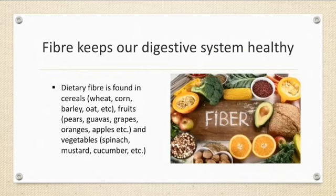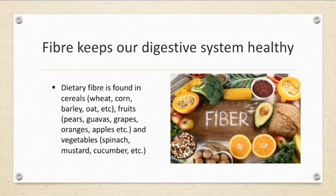Now we will talk about dietary fiber and how it keeps our digestive system healthy. Dietary fiber holds water in it and softens the faeces in the large intestine so that it can pass out of the body easily. We can keep our digestive system healthy by eating food with plenty of fiber. Dietary fiber is found in cereals including wheat, corn, barley, oats, etc.